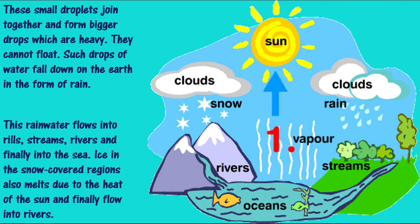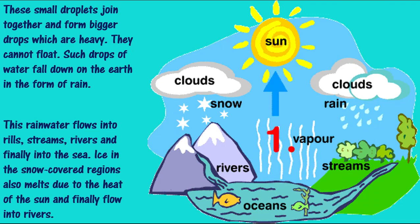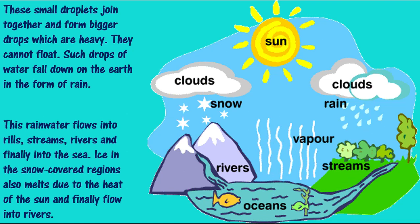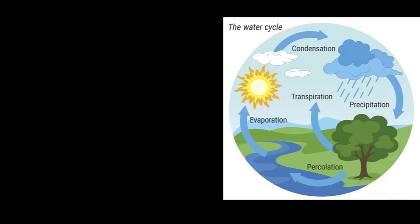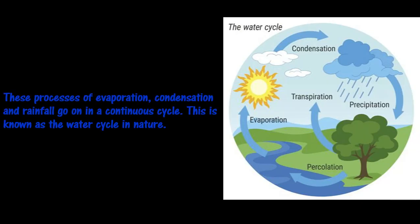This rainwater flows into rills, streams, rivers, and finally into the sea. Ice in snow-covered regions also melts due to the heat of the sun and flows into rivers. These processes of evaporation, condensation, and rainfall go on in a continuous cycle — this is known as the water cycle in nature.